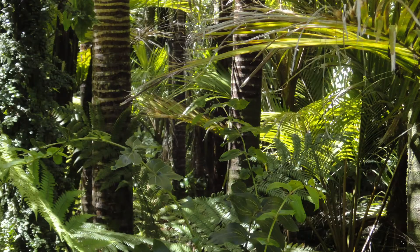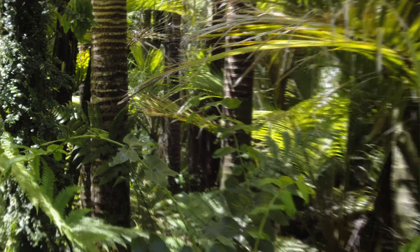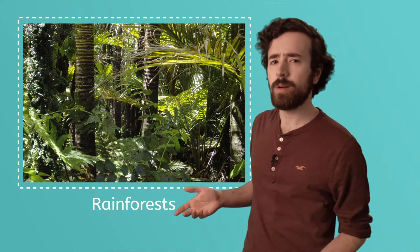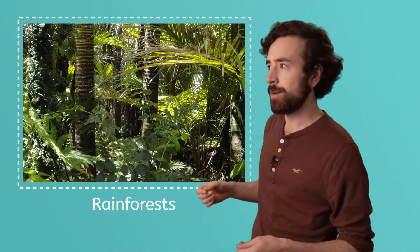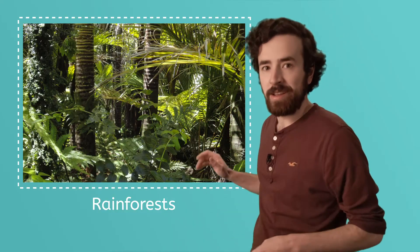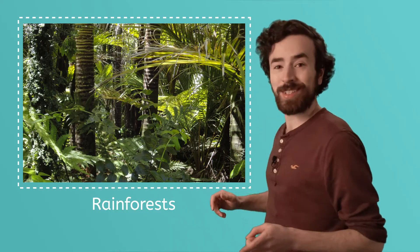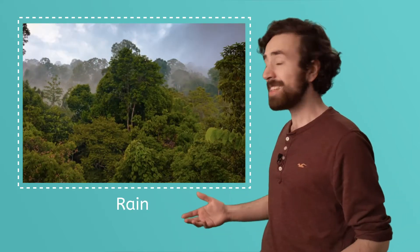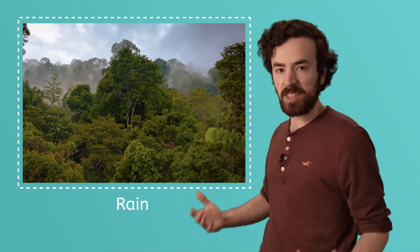Unlike temperate forests, other forests are in places where it doesn't get cold. In fact, some forests are in places where it's always hot. These types of forests are called rainforests. Why do you think they're called that? Here's a hint: rain forest. Rain, rain. Yes, these forests get lots and lots of rain. It is hot and wet all year long.